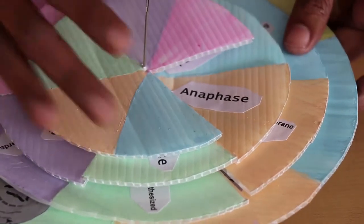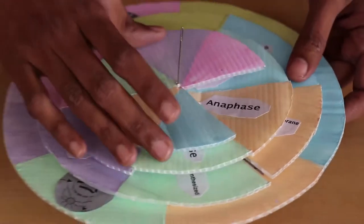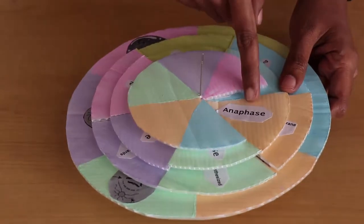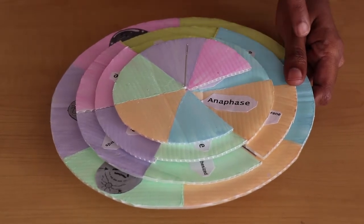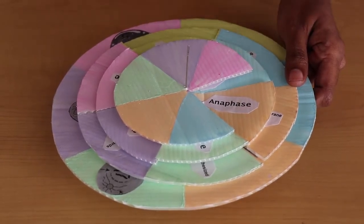So what I do is I take this aid and I point it to anaphase, and tell the child to find the correct characteristics of anaphase and match it with the correct diagram.